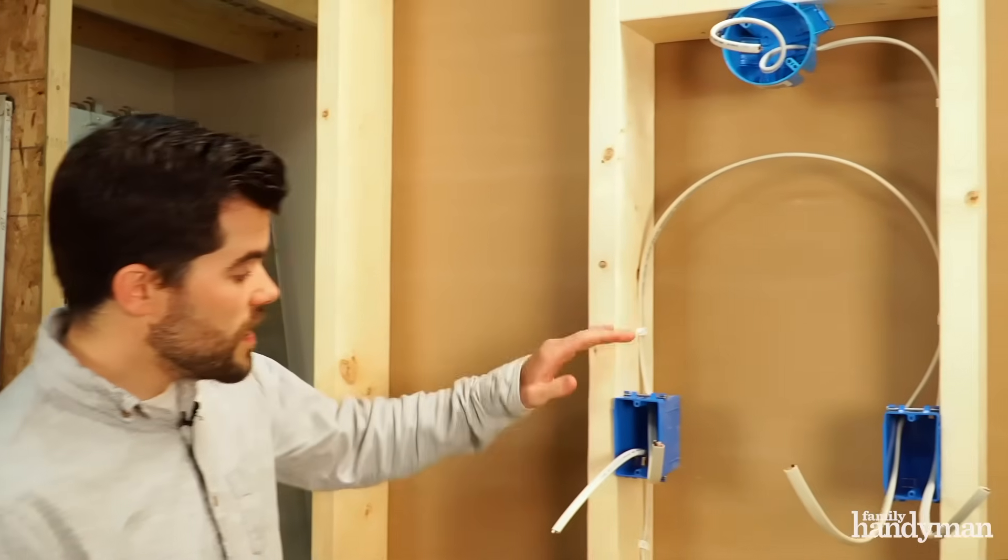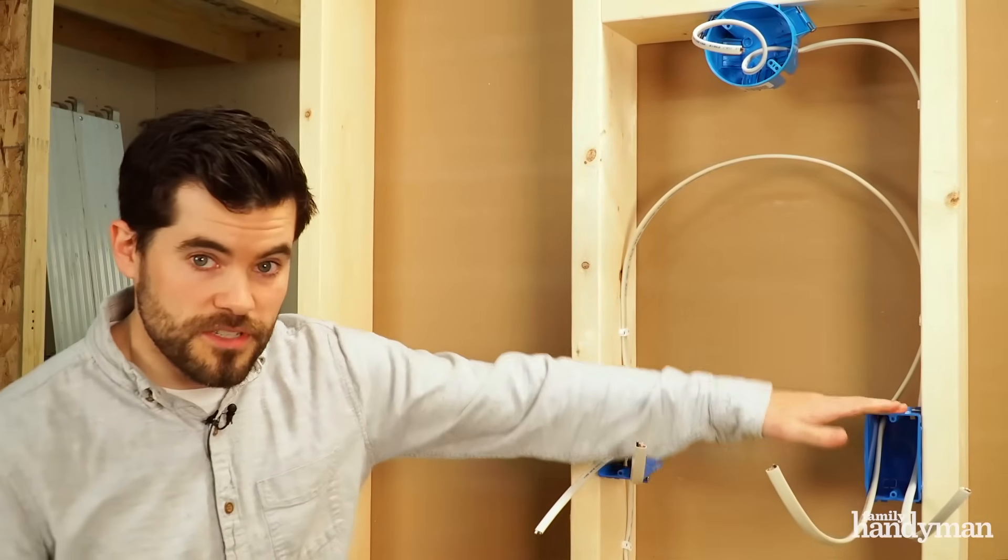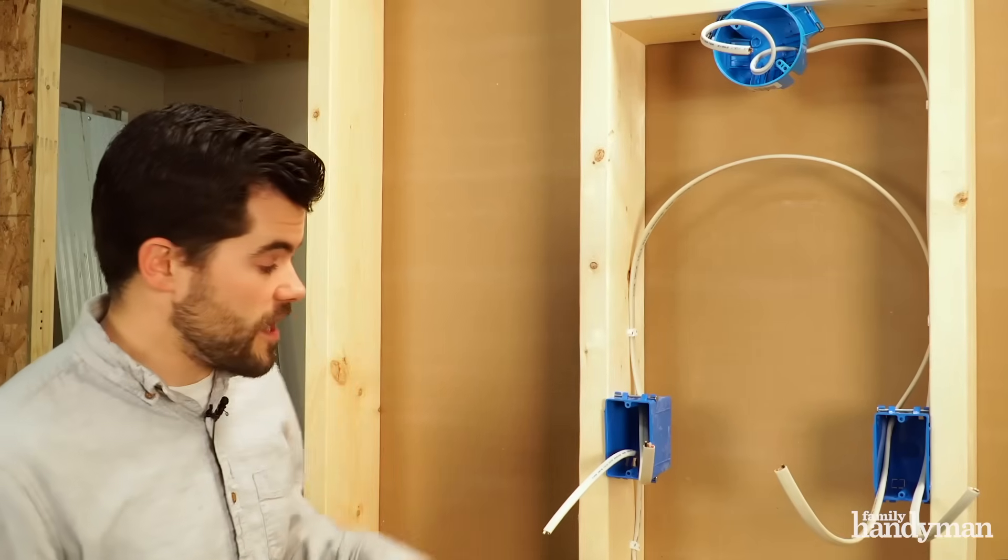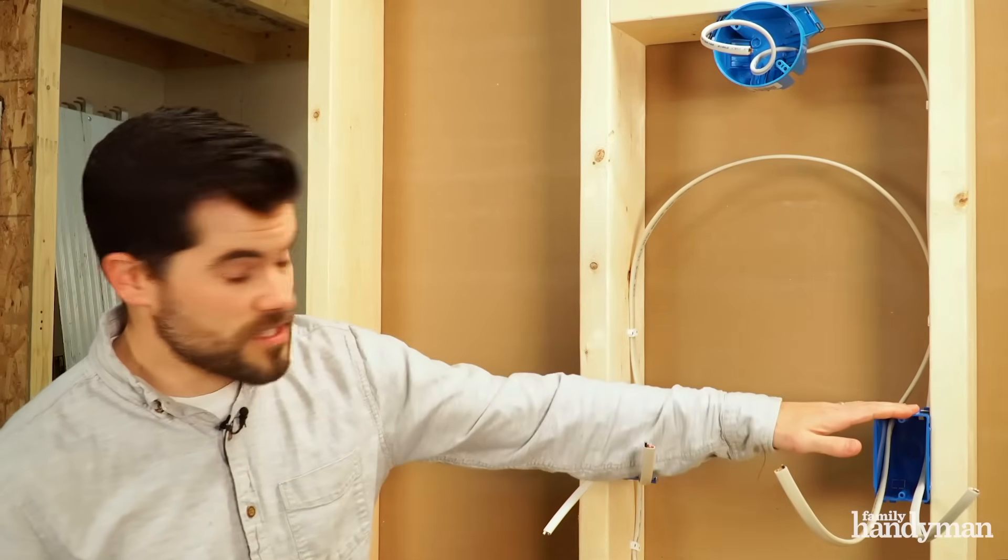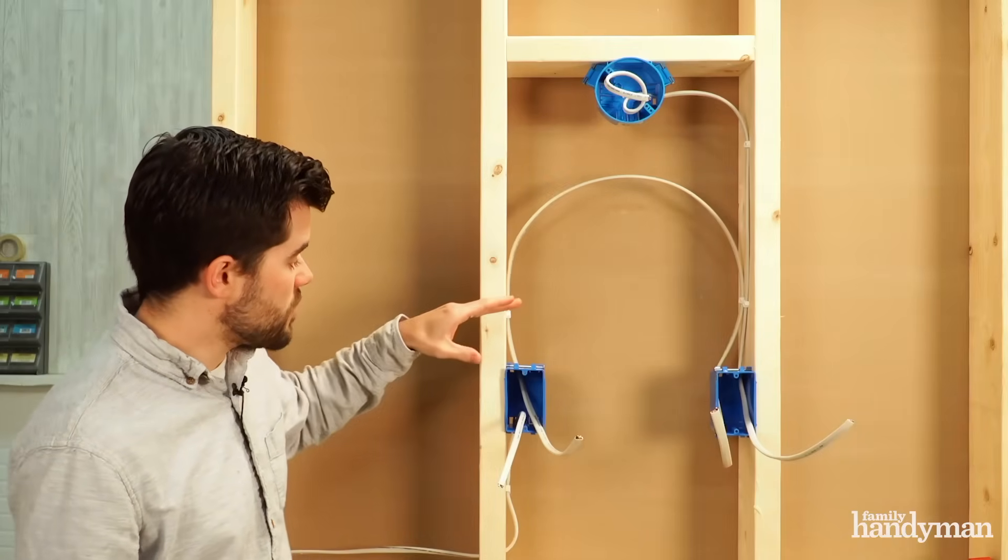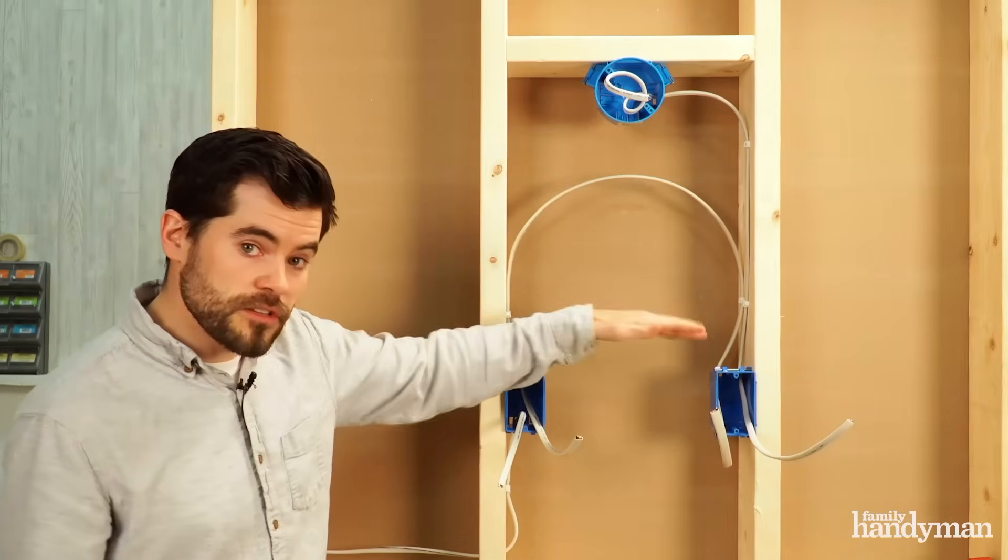Now some common situations where you might find a three-way switch would be at the bottom and the top of your stairs or in a space that has multiple entrances like your garage, inside and outside the garage. Now the three-way switches operate one light so you can turn them on or off from either location.